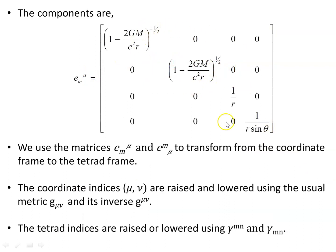We use the matrices e lower m upper mu and e upper m lower mu to transform from the coordinate frame to the tetrad frame, whether in the tangent or cotangent basis. The coordinate indices mu and nu are raised and lowered using the usual spacetime metric g_mu-nu and its inverse g^mu-nu. The tetrad indices m and n are raised and lowered using the Minkowski metric eta_mn or eta^mn.